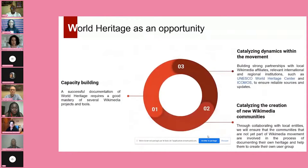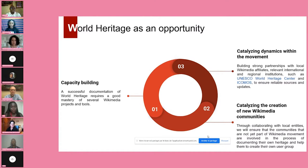So we decided to create the Wiki World Heritage User Group. Our purpose was not only to document World Heritage, but to go beyond and see World Heritage as an opportunity to empower Wikimedians and foster the Wikimedia movement in many countries. This will be done through three aspects. First, World Heritage is a very good opportunity for capacity building for Wikimedians, because it is a complex topic that requires mastery of many Wikimedia projects and tools.